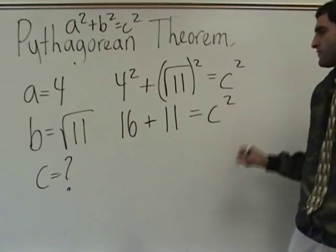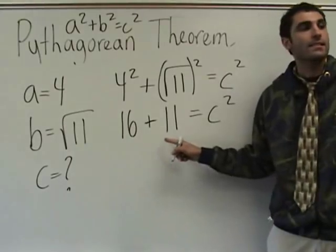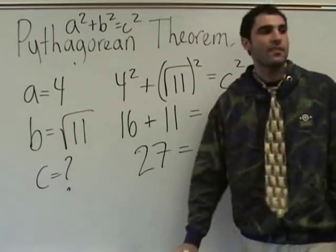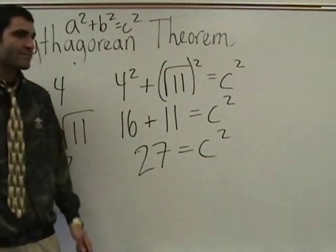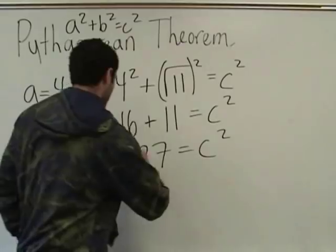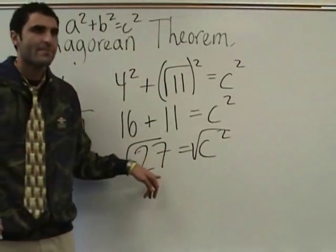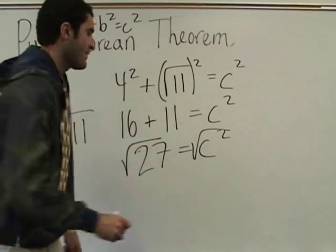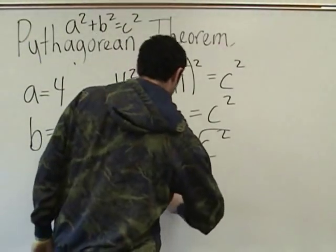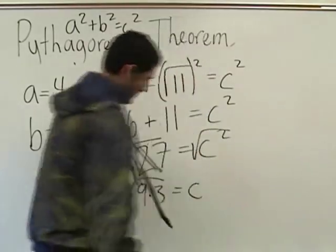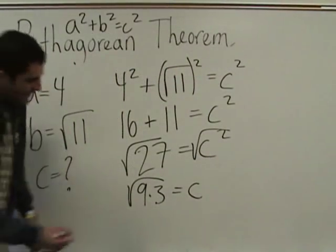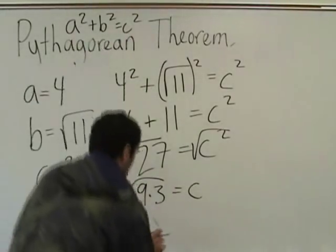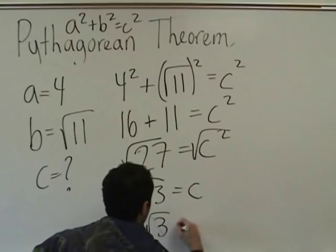Equals C squared. 27. Then what do we do to both sides? We need to square root it. Square root both sides. So the square root of 27 — isn't it 3 root 3? The square root of 27 is 3 root 3, yes. We'll do it real quick: 9 times 3. Square root of 9 is 3. So 3 root 3 equals C.